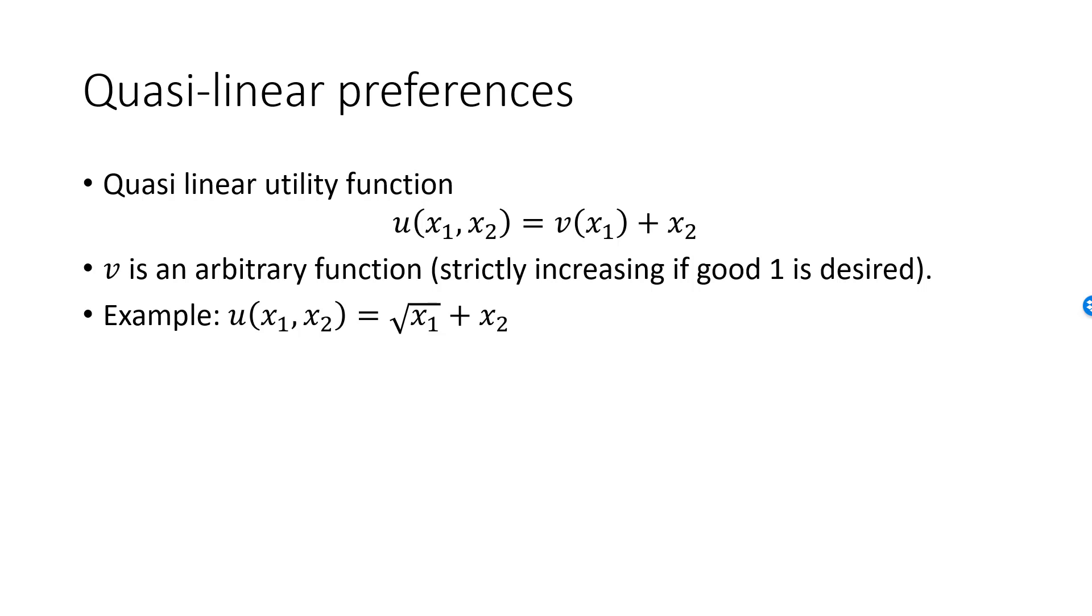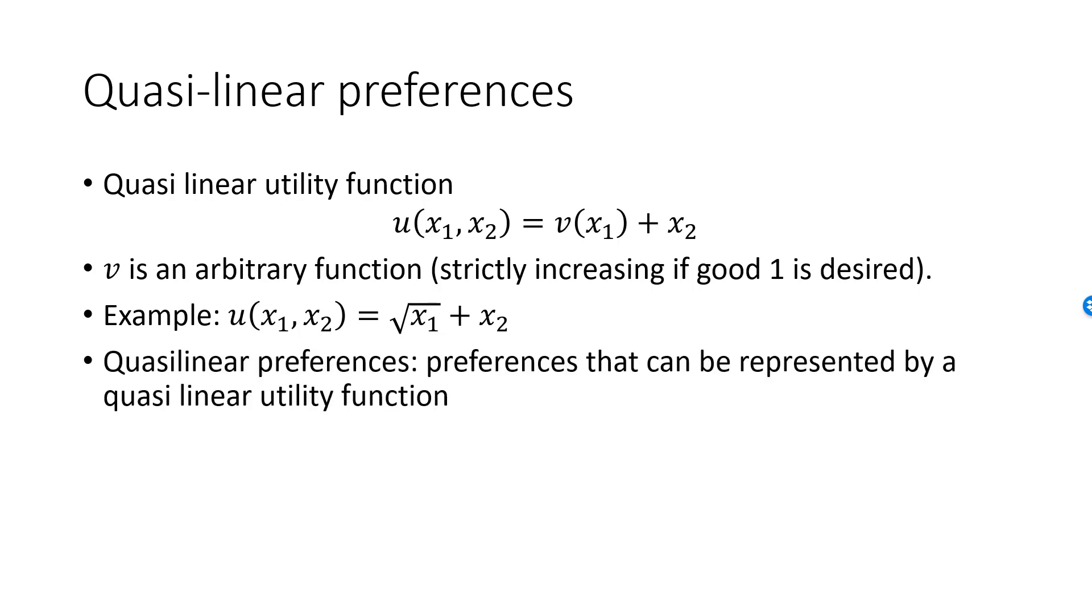A utility function $u = x_1 +$ some function of $x_2$ is also quasi-linear. If it's possible to represent preferences using a quasi-linear utility function, then we say that preferences are quasi-linear.